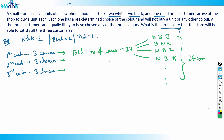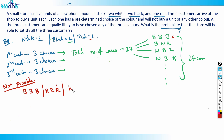Out of these 27 cases, which ones are not possible? Since there are only two black phones, the case black-black-black is not possible. Similarly, red-red-red is not possible because there is only one red phone. And white-white-white is not possible because there are only two white phones. So three cases are already removed.